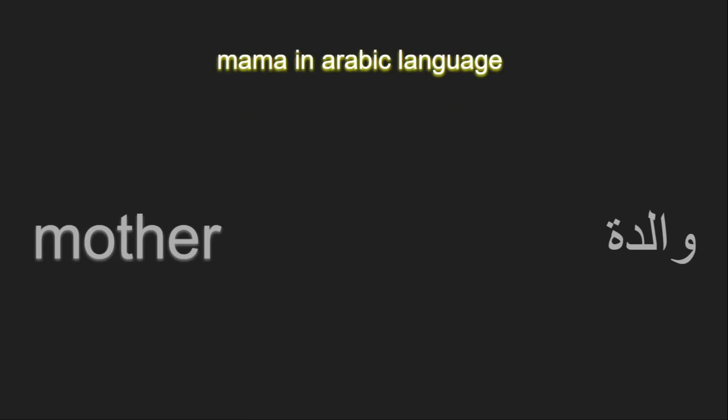You can say 'Mama' for mama. Or you can say 'Ummi' for 'my mom.' Let's take an example — let's say you want to ask about your mom and you don't know where she is. You can say 'Aina Ummi,' which means 'Where is my mom?'